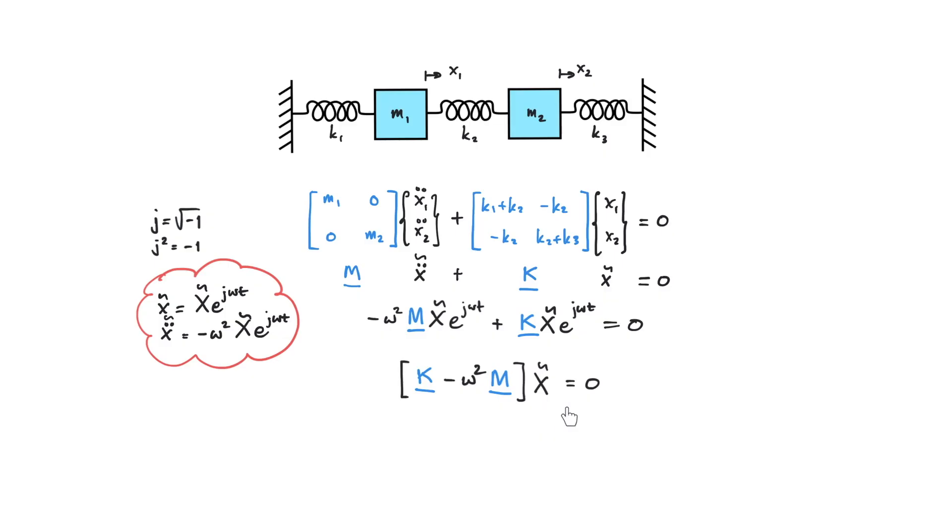Now what we have here is the equation of motion for harmonic motions in matrix form for a two degree of freedom system. We have two terms here. The first one is the square matrix component K minus omega square M, and the second term is the column vector element which is the displacement of the system.